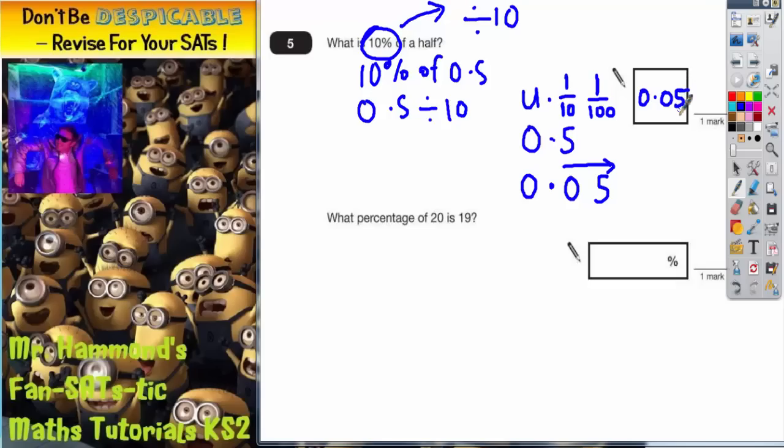There is one other answer that they may accept there, and you could actually say that that is five one hundredths. To get five one hundredths, you could have called 50 one hundredths a half. So a half is 50 out of 100, and 10% of that, 10% of 50 is five. So that is where five one hundredths would have come from. But the answer to that one is 0.05.